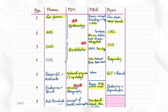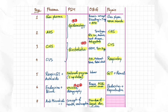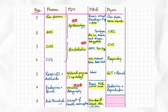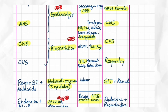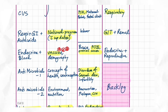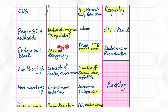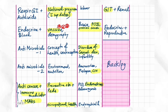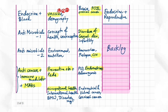On Day 3 of OBG: GDM and twin pregnancy. Day 4: pregnancy-induced hypertension, maternal pelvis, and fetal skull. Day 5: everything about liver. Day 6: start with Gynaecology — give importance to PCOS, ovarian cancer, disorders of sexual development, CIN, endometriosis, and vulval cancer. Read gynae cancers very well.